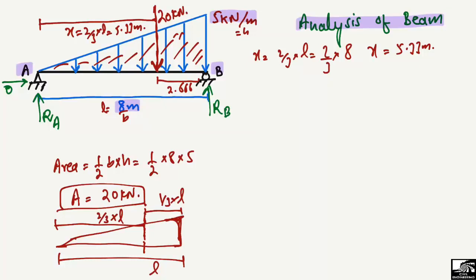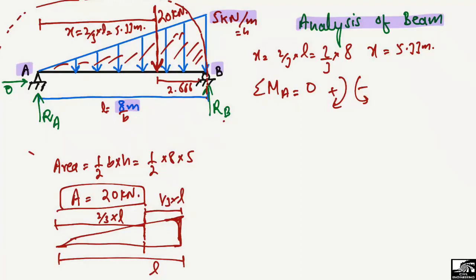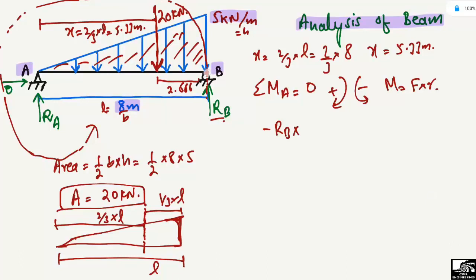Now we have all the important parameters. We will use the equilibrium equation — summation of moments at point A equals zero. We take clockwise moments as positive and anti-clockwise moments as negative. RB acts upward and creates an anti-clockwise moment about A, so it is negative: −RB × 8.